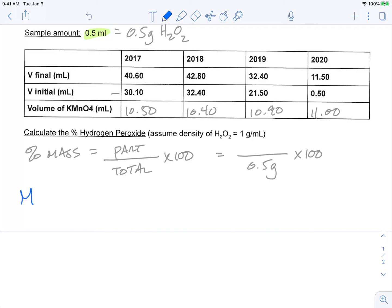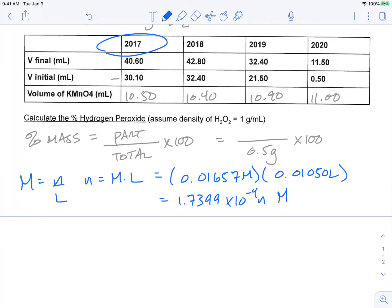So rearranging our molarity equation, we can calculate the moles of potassium permanganate used. And what we'll do, just as an example, we can use the 2017 as an example here. In class, you would normally just have one of these, or maybe you'd compare one to the other. So our molarity again was 0.01657 molar, and then using the volume of potassium permanganate, but converting it to liters, this would be 0.01050 liters. So then that would mean, doing our math here, 0.01657 times 0.0105, we would get 1.73399 × 10^-4 moles.